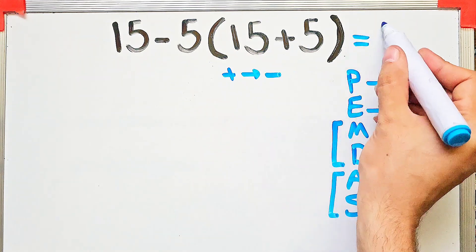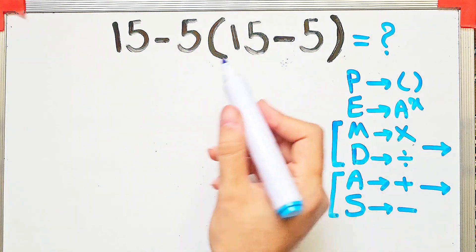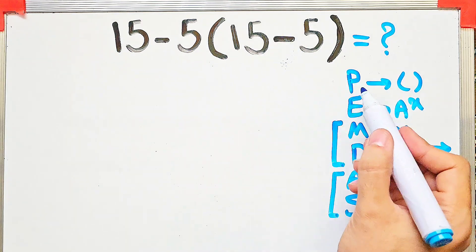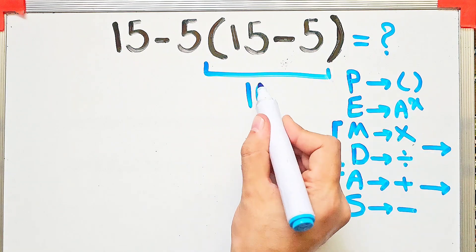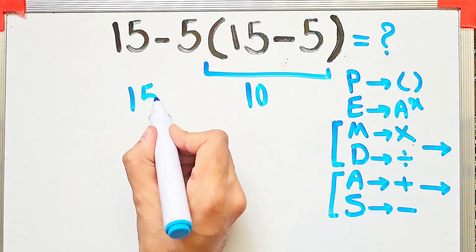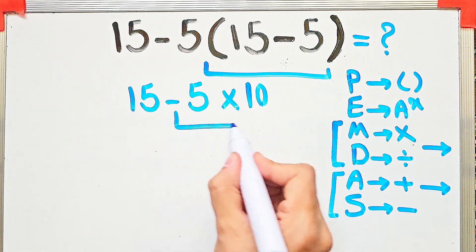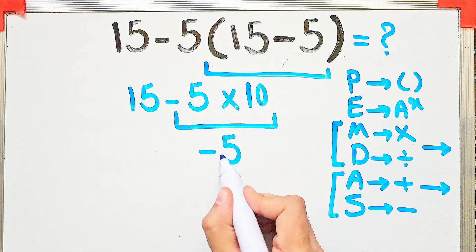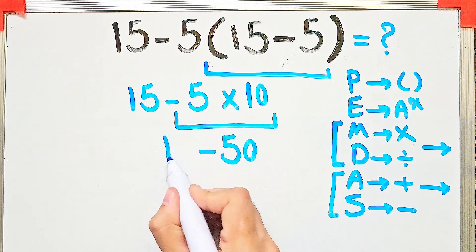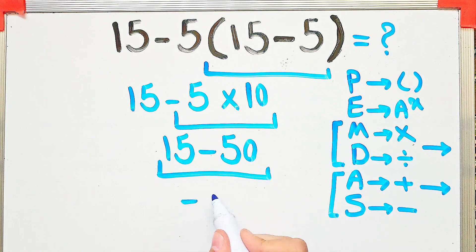What would the answer be if we change the plus sign to a minus sign? Let's solve it step by step. Now we have a new expression. Again, we simplify the parentheses: 15 minus 5 equals 10. Now we have 15 minus 5 times 10. Again, we do the multiplication because it has higher priority: negative 5 times 10 equals negative 50.